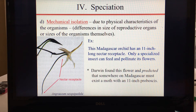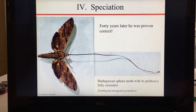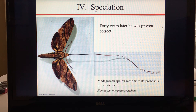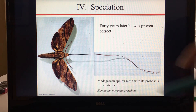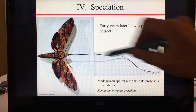Darwin found this flower and predicted that somewhere on Madagascar there would be a moth with an 11-inch proboscis — a science term for anything sticking out the front of your face; we have one, it's called a nose. He never found it, but 40 years later someone else did. This is the Madagascan sphinx moth, and its proboscis fully extended is actually longer than its body.